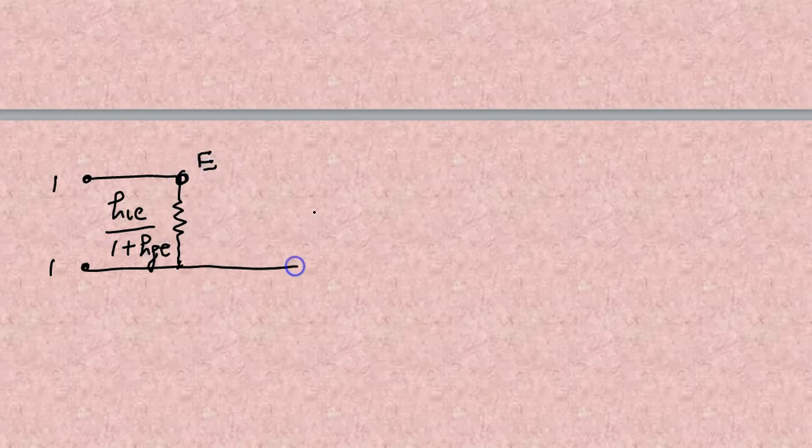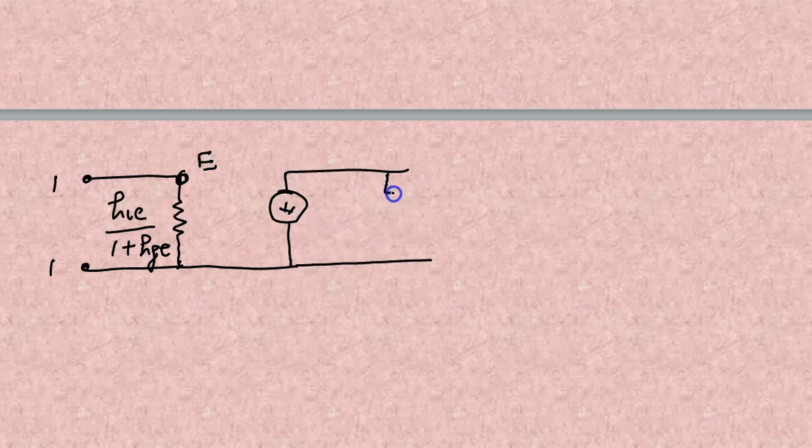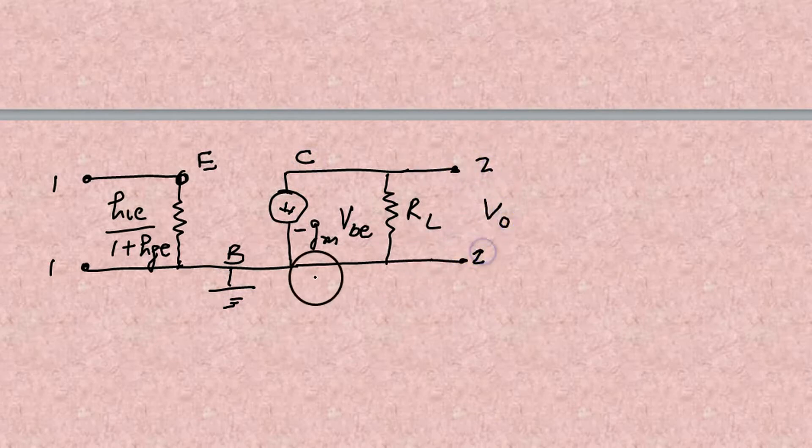So we again draw the circuit. Because we proved now that HIB is HIE upon 1 plus HFE. This is emitter, this is current source. And here is the load resistance. This is GM, minus GM into VEB. You can prove it. Minus GM into VEB is also IC. The port number 2 and 2.